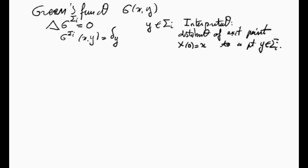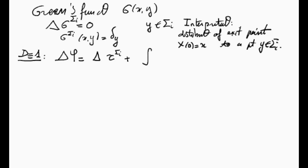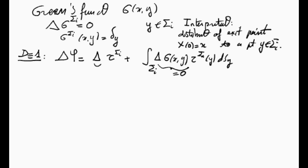Now let's show that φ satisfies the PDE. Assuming d = 1 for simplicity, the Laplacian of φ equals the Laplacian of τ_σᵢ plus the integral of Δⱼ(x, y) · τ_σᵢ(y) dsy over σᵢ — where we differentiate under the integral sign. By definition, Δⱼ = 0, so the second term vanishes, and the Laplacian of τ_σᵢ equals -1. Therefore Δφ = -1.